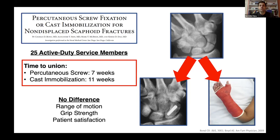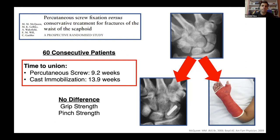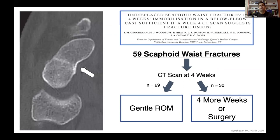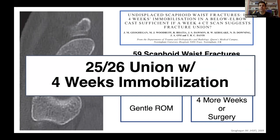This has been repeated in other studies — 60 patients showing earlier time to union with percutaneous screw fixation versus cast immobilization, with immobilization averaging 13.9 weeks. A study from the UK looked at 59 scaphoid waist fractures with a specific algorithm: immobilized in short arm cast without thumb and CT at four weeks. Half showed evidence of healing at four weeks and moved to gentle range of motion with no weight bearing. The other half received four more weeks of immobilization or surgery if displaced. 25 of 26 patients ultimately united their fracture with just four weeks immobilization in a short arm cast with thumb free.